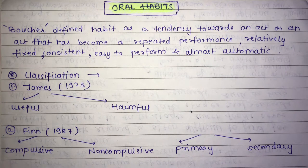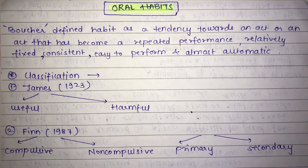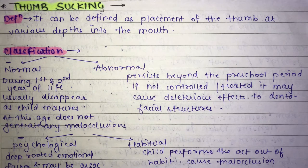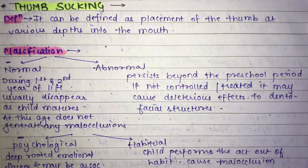The topic is oral habits, mainly covering thumb sucking. A habit is defined as a tendency towards an act that has become a repeated performance — relatively fixed, consistent, easy to perform, and almost automatic. Thumb sucking is defined as the placement of the thumb at various depths into the mouth. It is not compulsory that the patient places the whole thumb in; some place only a small part and some place it completely.